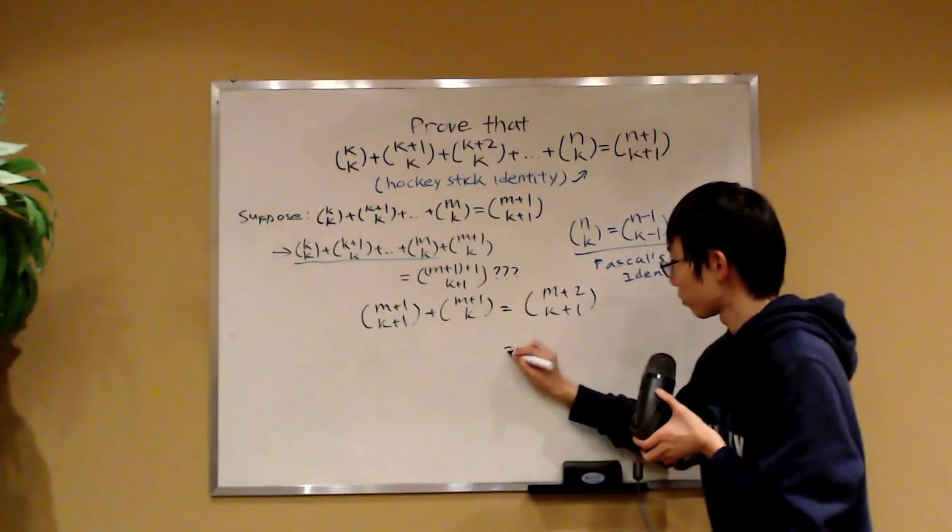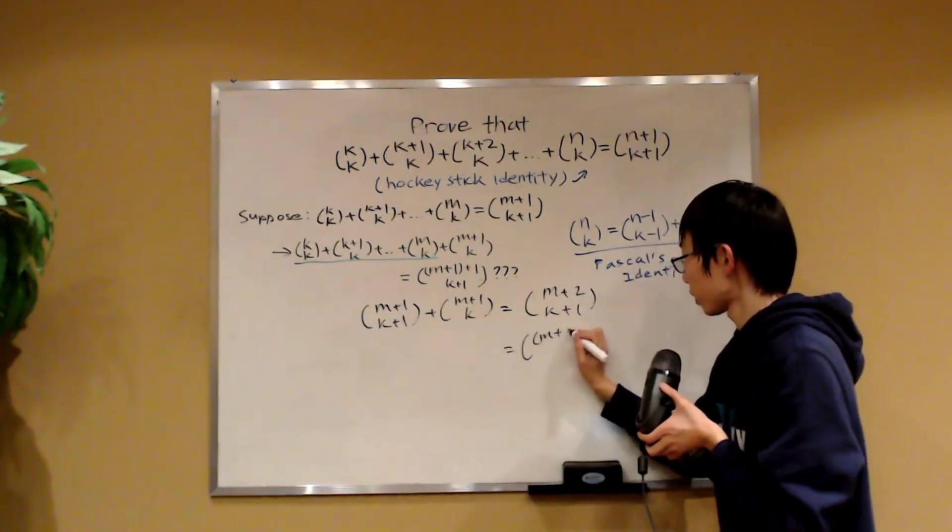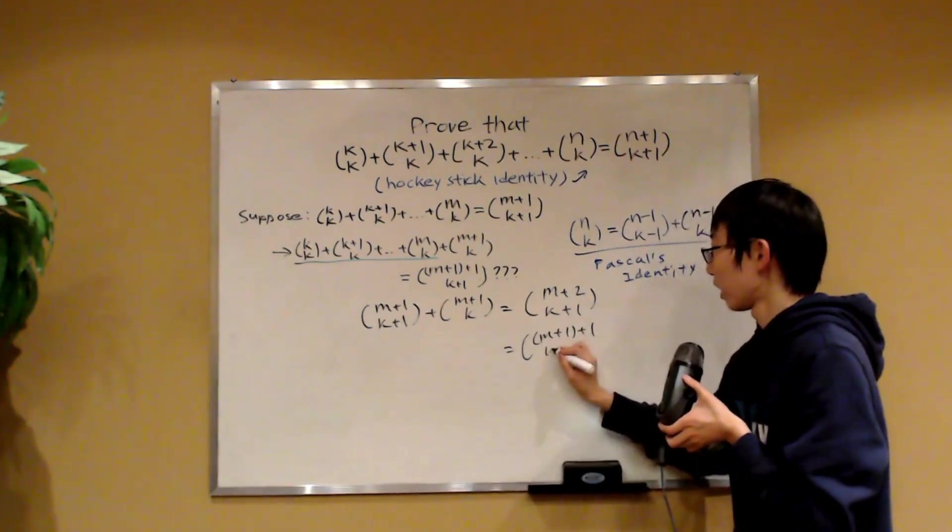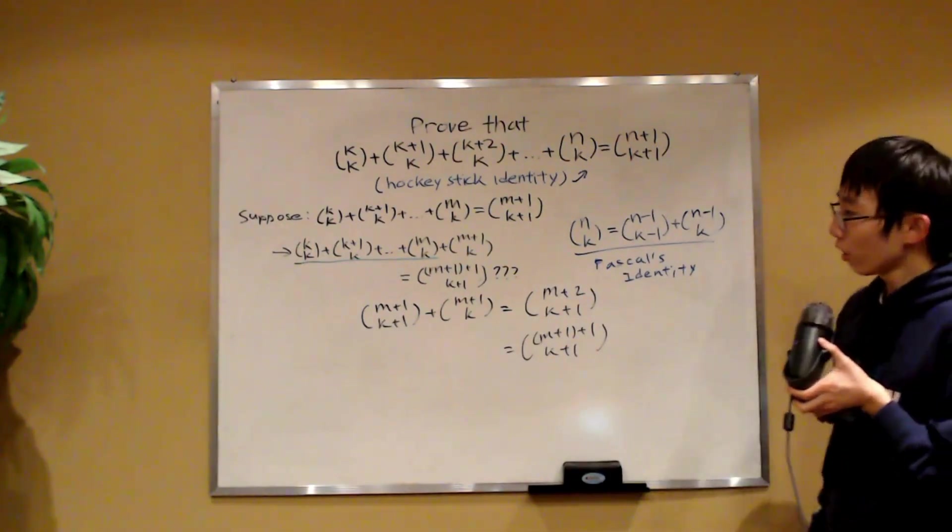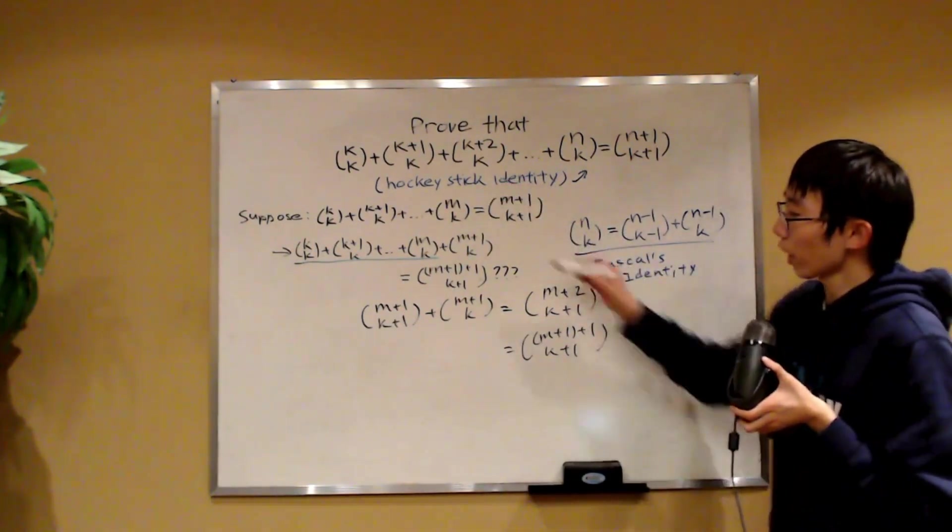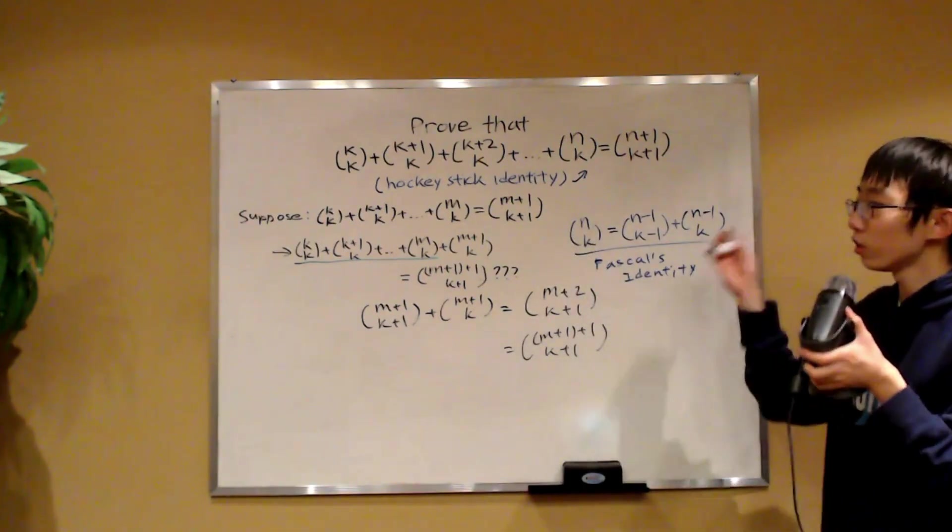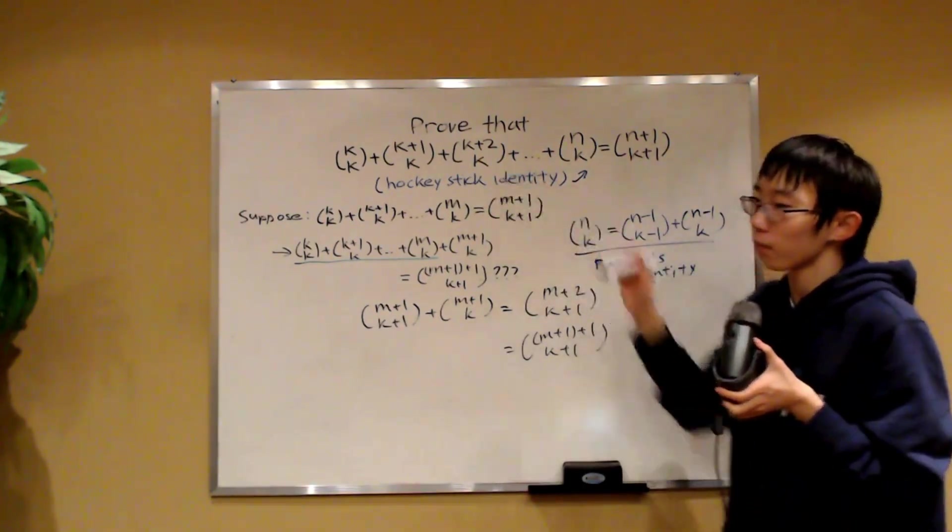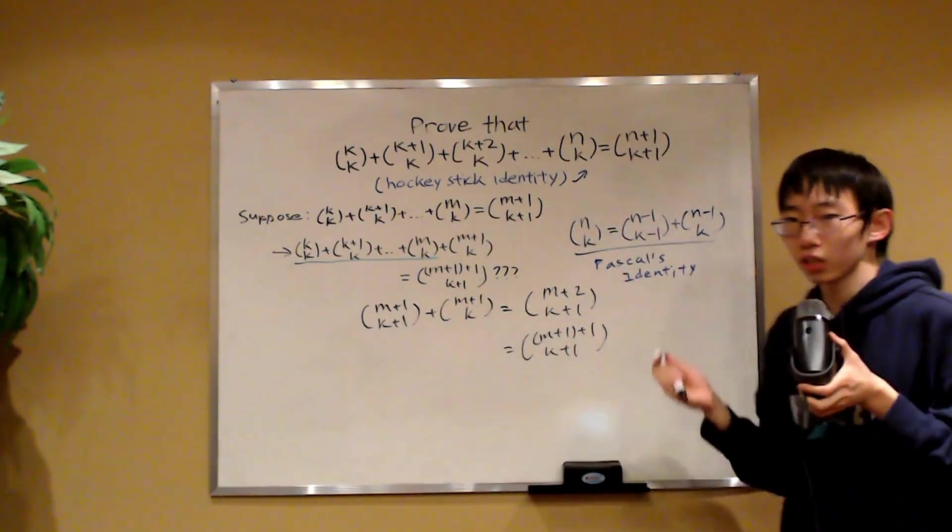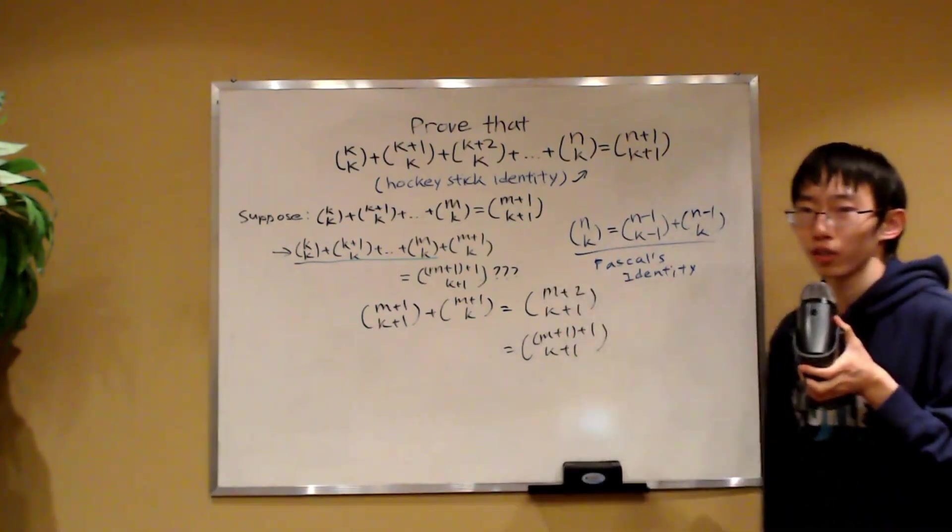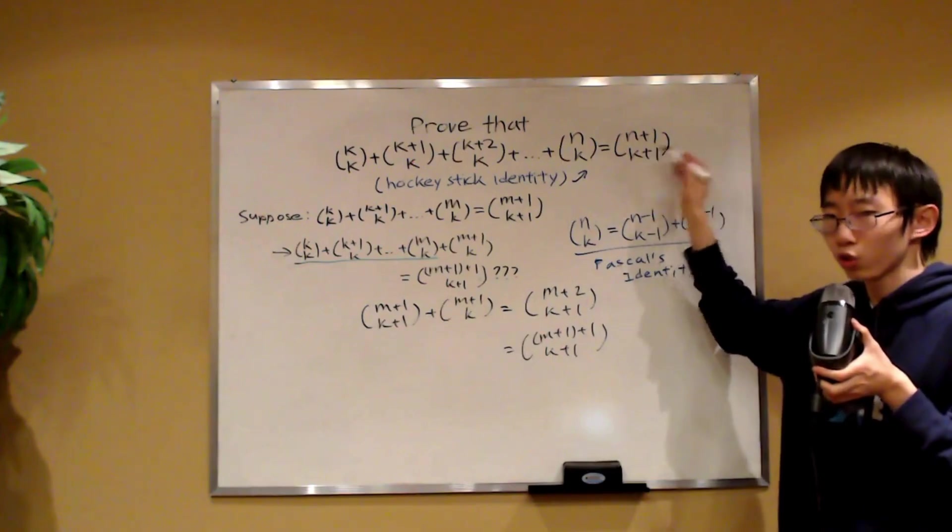And this obviously can be written as m plus 1 plus 1 and then choose k plus 1. So we proved that if it works for m, it also works for m plus 1. Well, we already know that there exists an m such that this formula works. So basically by induction, it works for all positive integers. So this identity is indeed true.